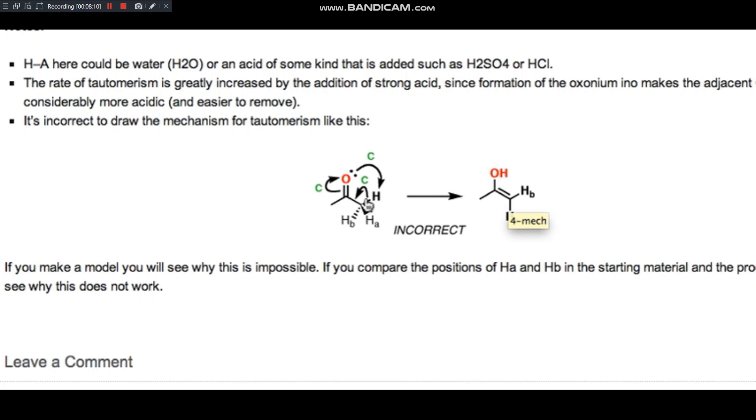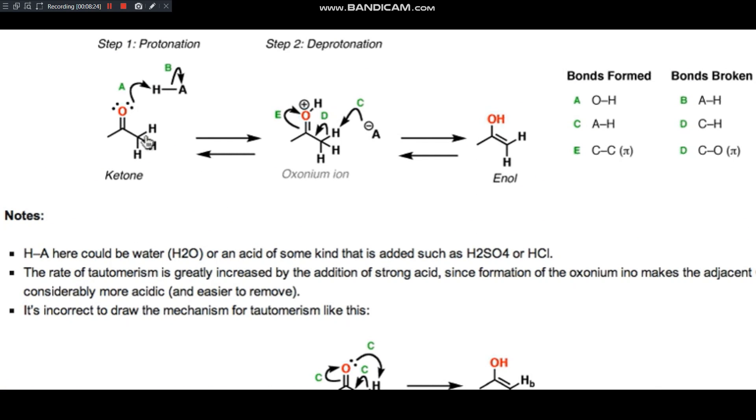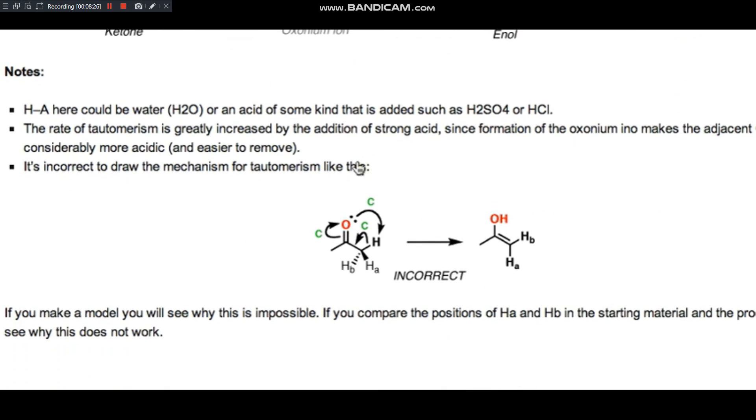The P orbitals forming this alkene are pointing out of the page. Okay. And that's what this carbon hydrogen bond, which is in the plane of the page, is supposed to turn into a pi bond and they're actually oriented 90 degrees to each other. So this is not correct. If you see this drawn, make sure that you familiarize yourself with this different mechanism.